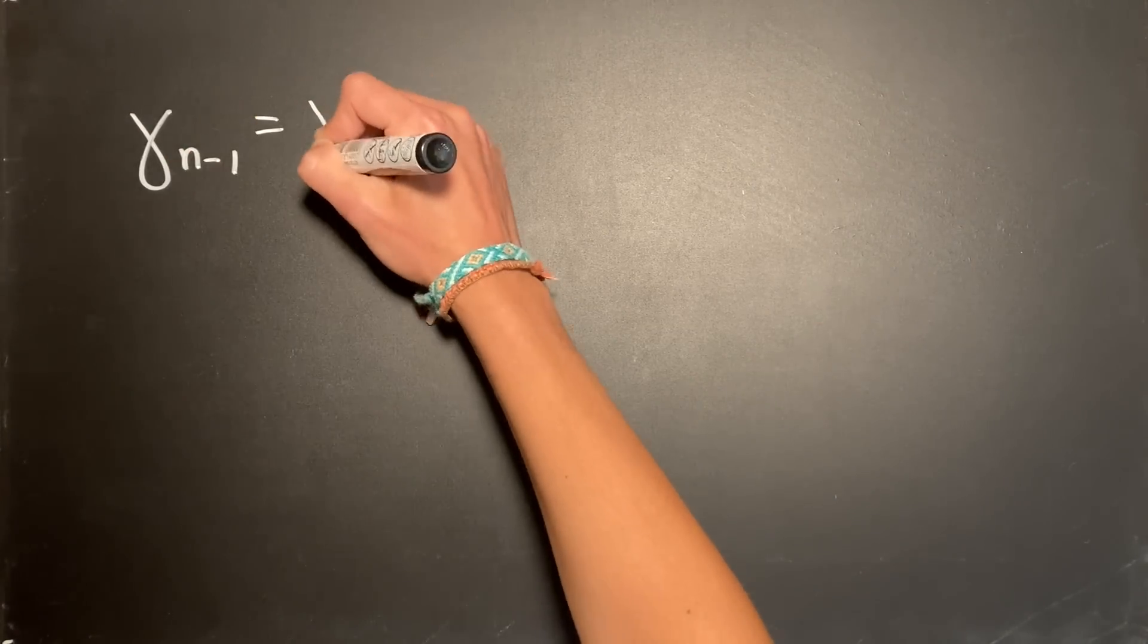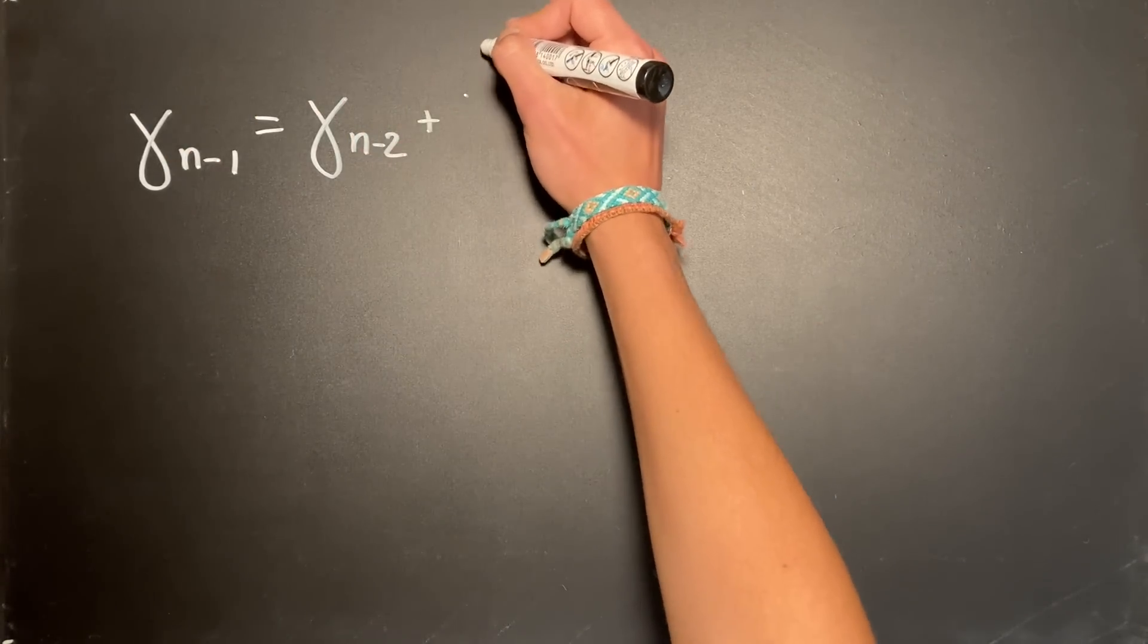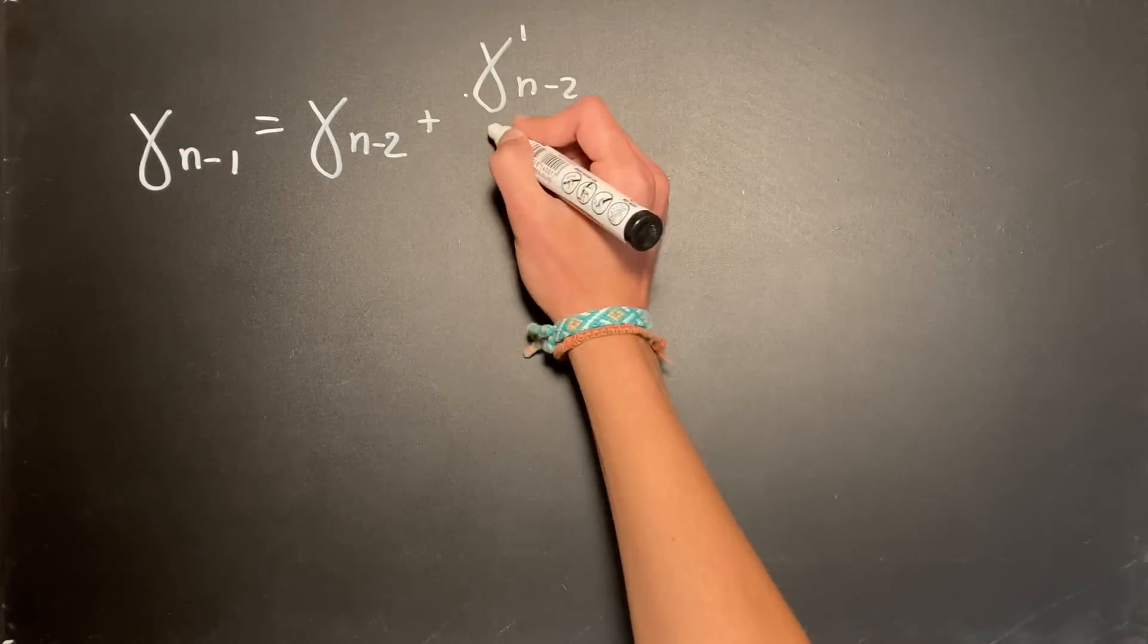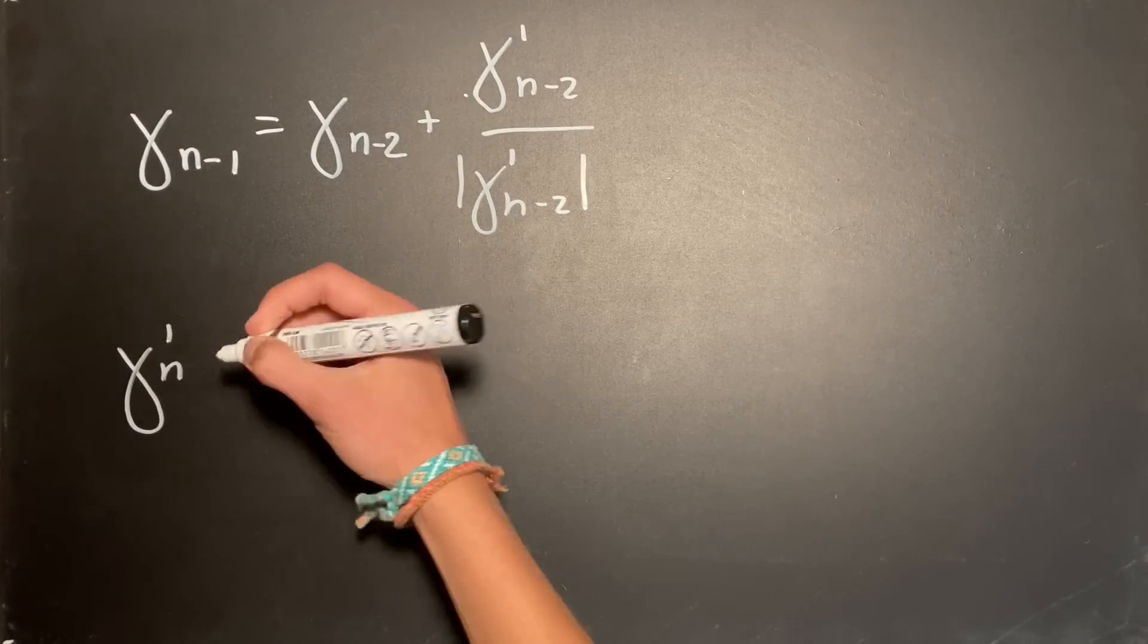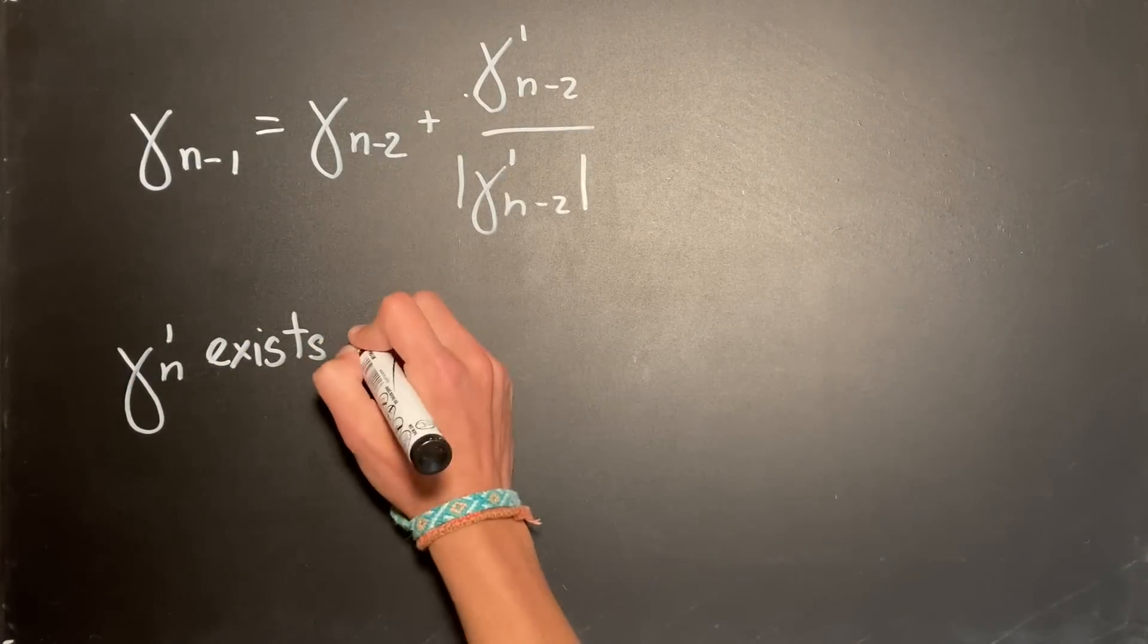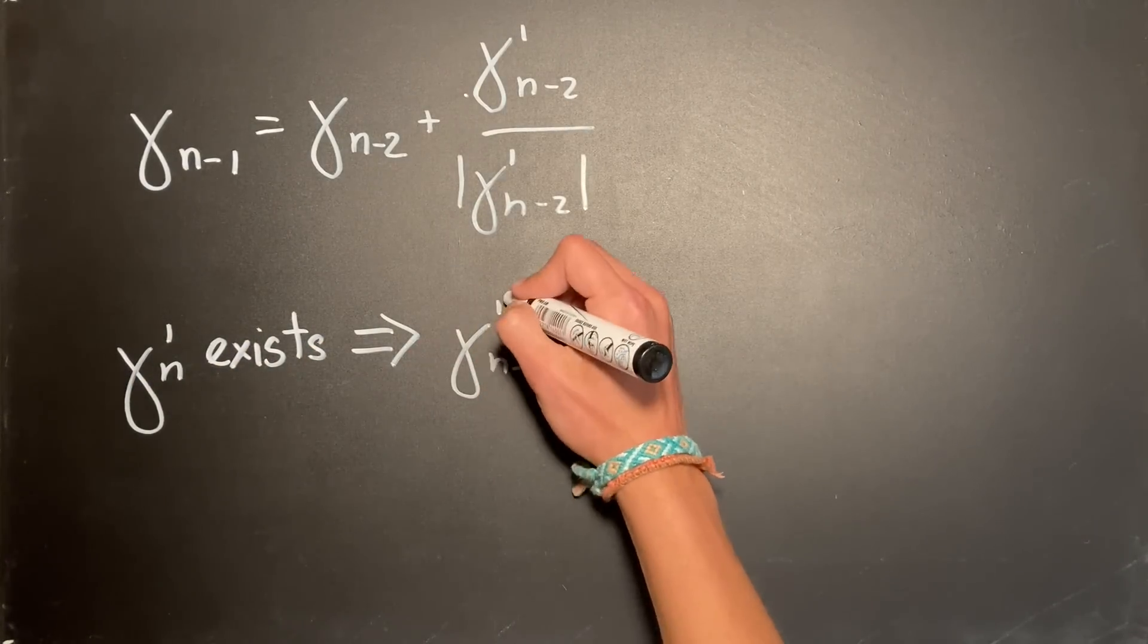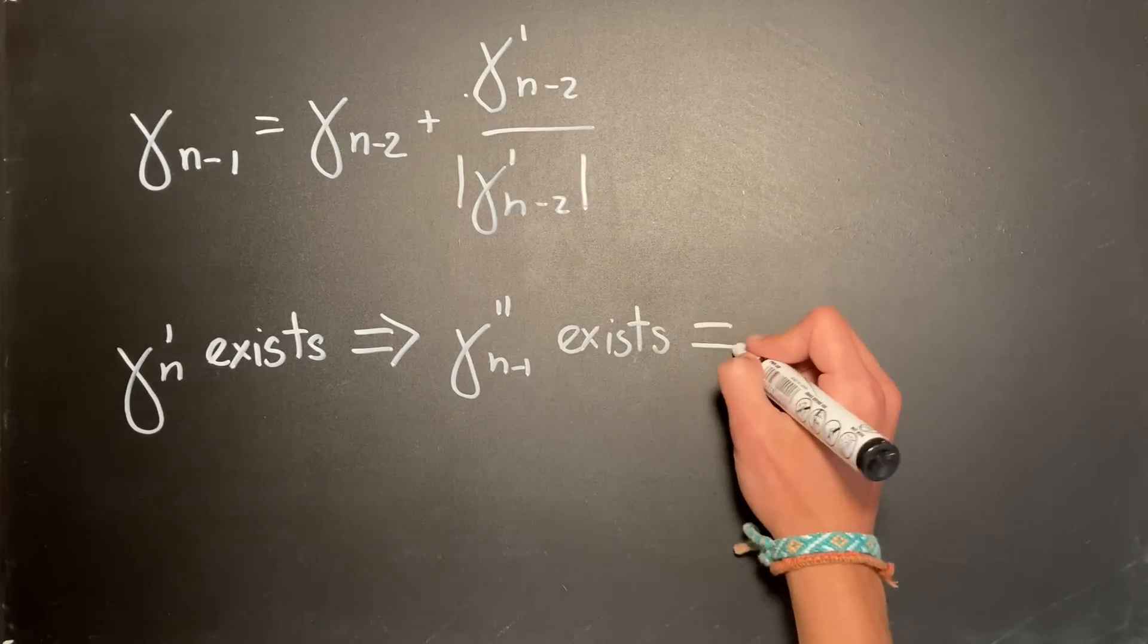Similarly, the equation for gamma_(n-1) contains the derivative of gamma_(n-2). This means that the third derivative of gamma_(n-2) exists at any time t between 0 and 1 if gamma_n is differentiable.